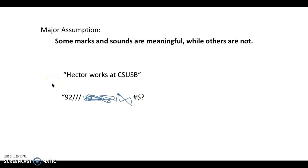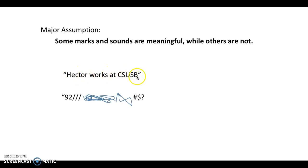One major assumption that we're going to be making in this course is that there are certain marks, like writing on the wall, scribbles, and certain sounds like my utterances, that are meaningful while others are not. For example, the marks 'Hector works at CSUSB' are meaningful, whereas other marks here are gibberish — those marks don't have any meaning.